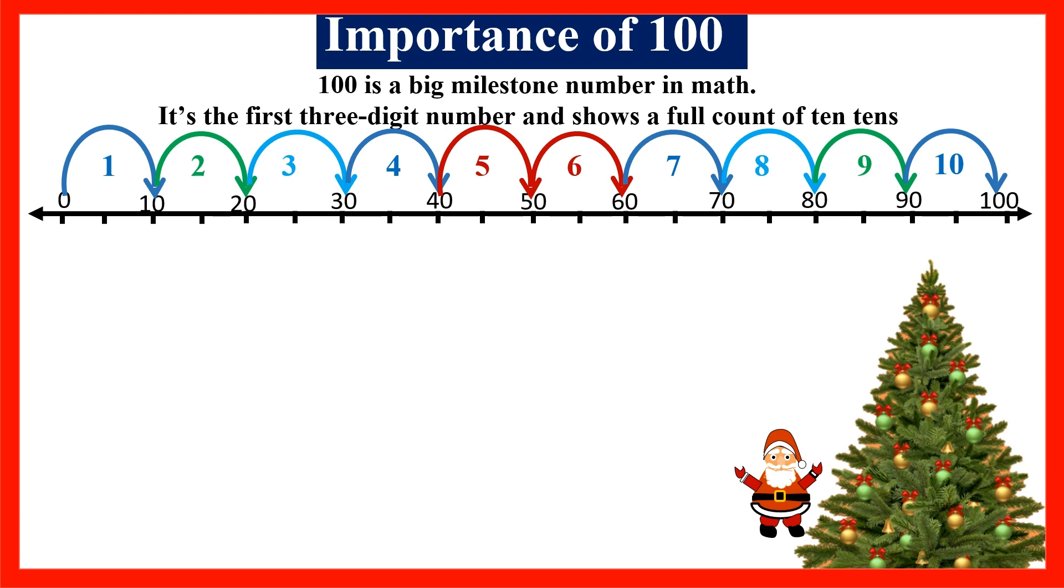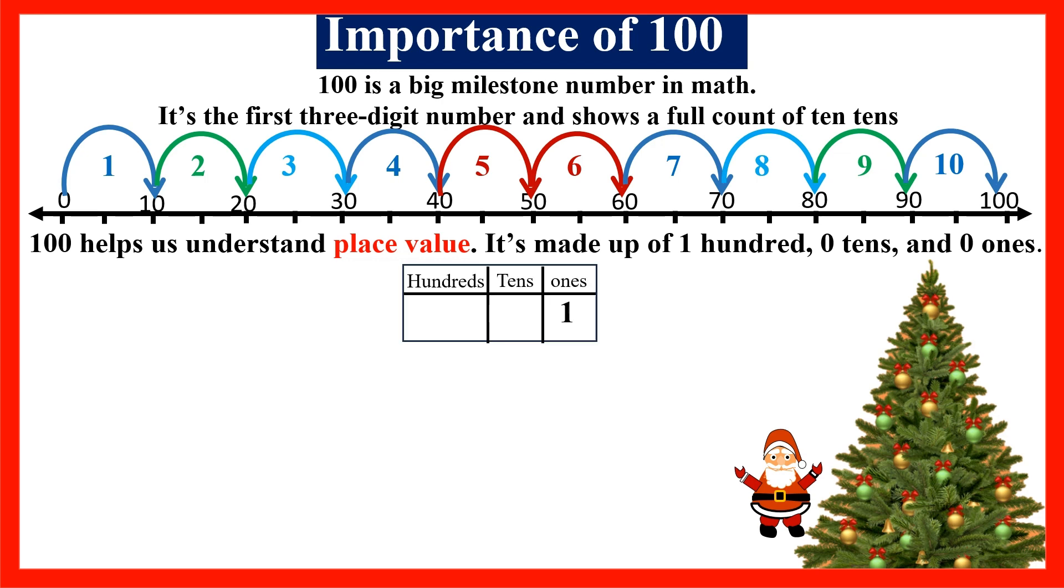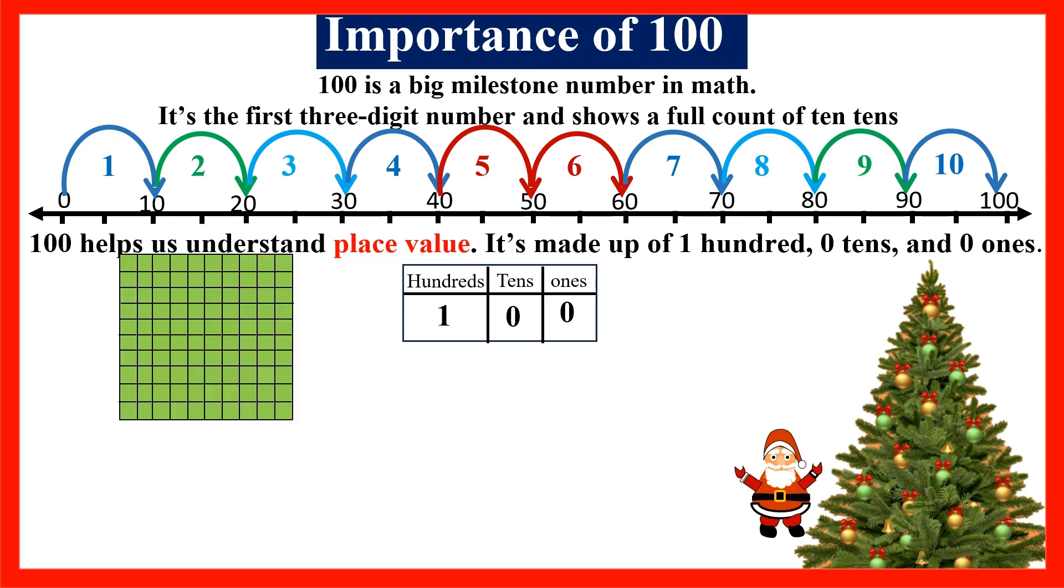So 10 tens is 100. 100 helps us understand place value. It's made up of 1 hundred, 0 tens, and 0 ones. A 1 in the ones place has value 1, but if we move the 1 to the tens place we have 10. If we move the 1 one more time to the hundreds place, we have 100.